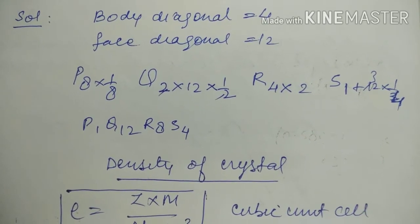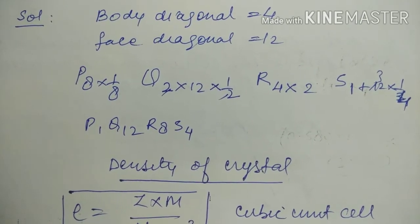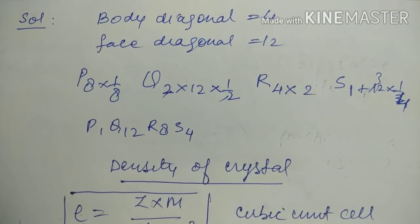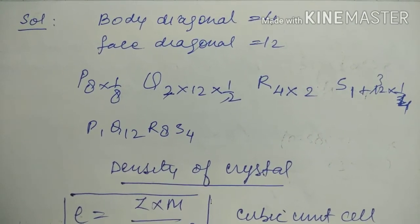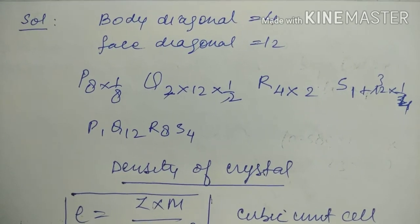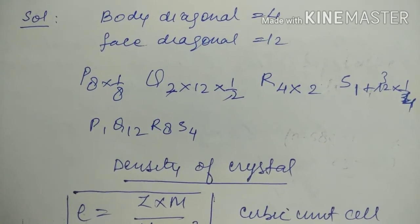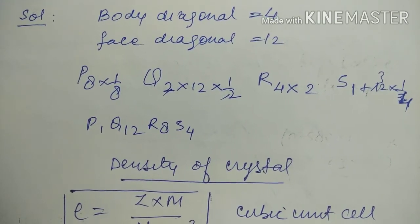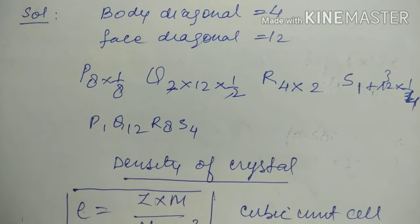Again, body diagonal is 4, face diagonal is 12. P is FCC, so 8 times 1/8 equals 1. Q has 2 atoms in each face diagonal, so 2 times 12 times 1/2 equals 12. Body diagonal is always 4, and each body diagonal has 2 atoms. Body diagonal atoms are inside, fully participating, so 4 times 2 equals 8. S is body centered, so 1, plus 12 edges times 1/4 equals 3. So P1, Q12, R8, S4.